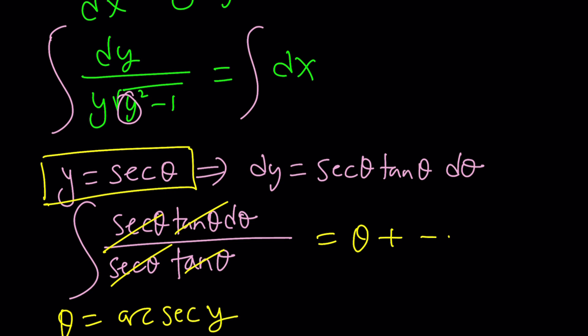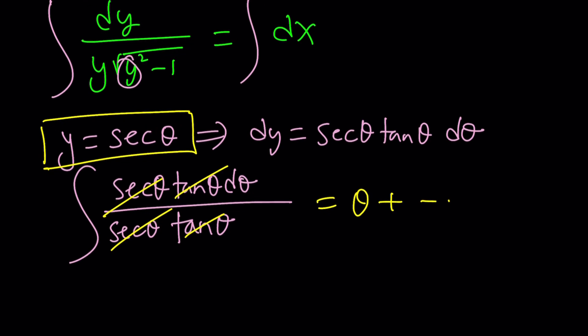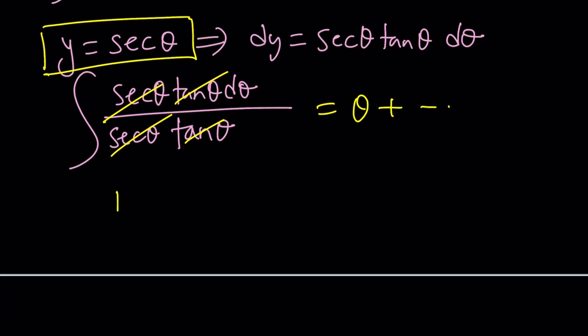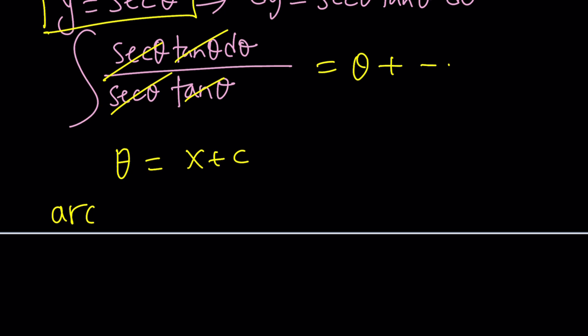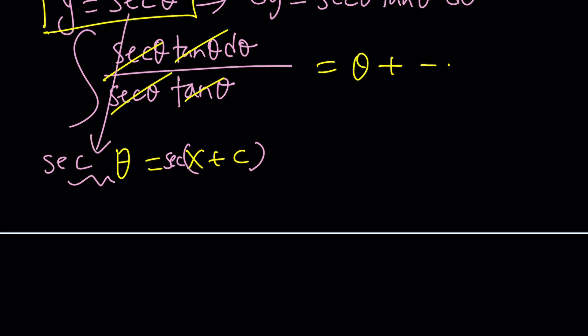Since y equals secant θ, we have θ equals arc secant y. So arc secant y equals x plus C, which means θ equals x plus C. Taking the secant of both sides: secant θ equals y, giving us y equals secant(x + C). That's the solution.